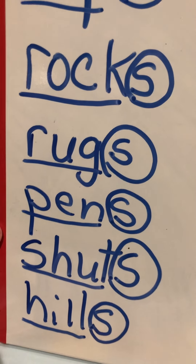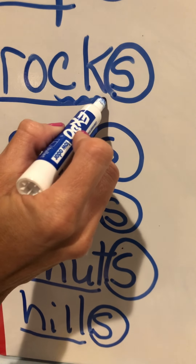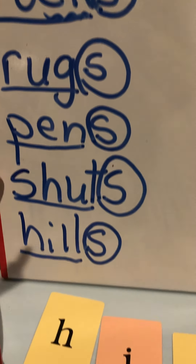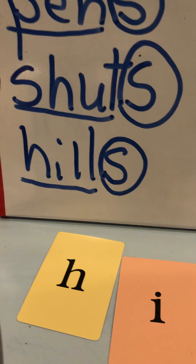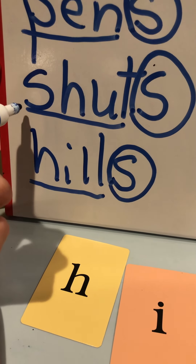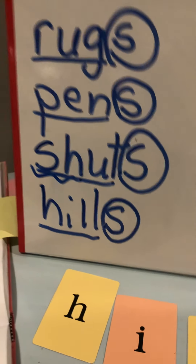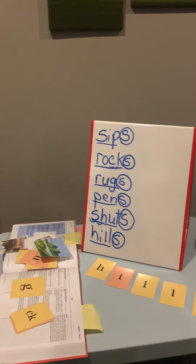Now let's go back to two of them and find some digraphs. Let's look at the word rocks — where do you see the digraph? Good, I hope you said CK, like in sock. And then one more down here in the word shuts — did you find the digraph? Good, SH, like in ship. Very good. So there you have it: adding S to verbs to make it known that you're doing it in the present, such as sips, rocks, and shuts. Thank you and have a great day.